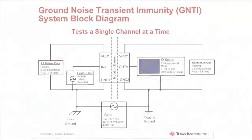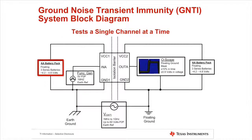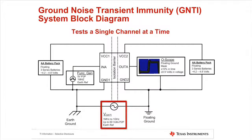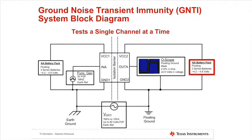Let's first go over the system block diagram showing everything from a high level. Going from left to right, the first part of the system is a floating battery pack that is used to power the VCC1 side of the isolator. Then, we have a function generator whose output is referenced to Earth that is used to generate the test signal that is transmitted across the isolator. Next, there is a noise signal that is injected between the two grounds that we refer to as the GNTI signal. Moving to the right-hand side of the block diagram, we have an oscilloscope whose inputs are left floating with respect to ground that is used to monitor the data integrity of the isolator. Lastly, there is a second battery pack that is used to power the VCC2 side of the isolation barrier.